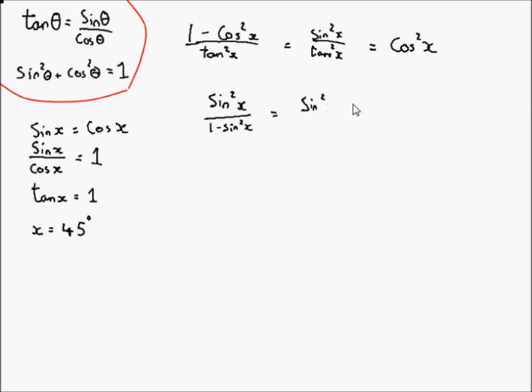You end up with sine squared x over cos squared x, which is equal to tan squared x.